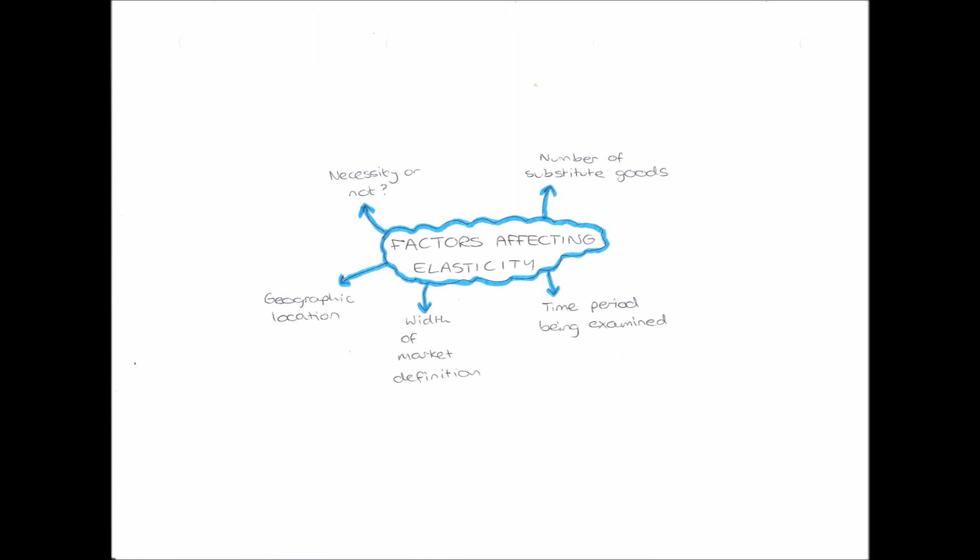And next we have our geographic location. I'm going to use our naan bread example again here. So in Britain bread will be an elastic good because it has lots of substitutes.